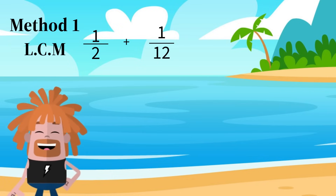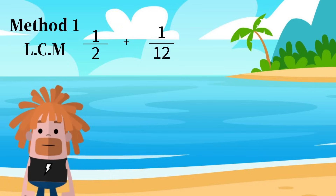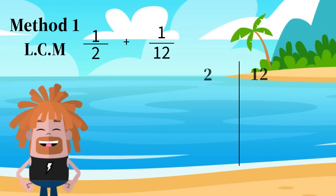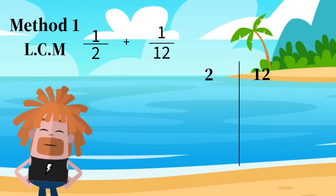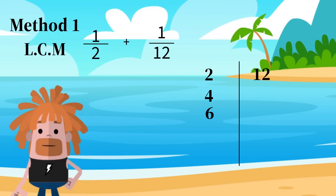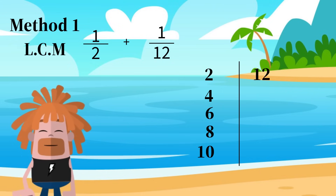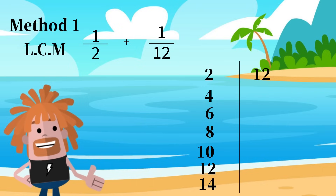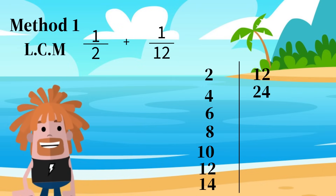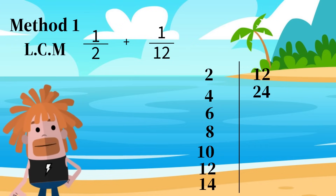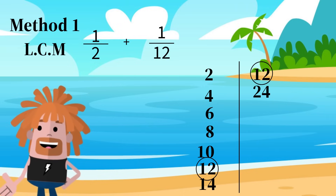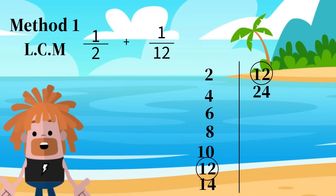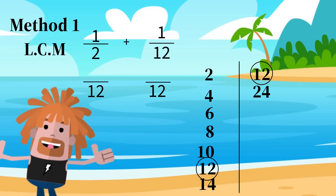Let's find the LCM for 1 half and 1 twelfth. We are going to list the multiples of 2 and 12. The multiples of 2 are 2, 4, 6, 8, 10, 12, 14. The multiples of 12 are 12, 24. We stop listing when we see a common multiple, which is 12. So our denominator for both fractions is 12, since 12 is the LCM.